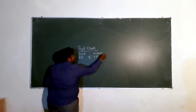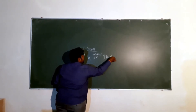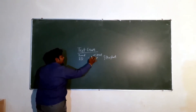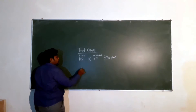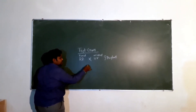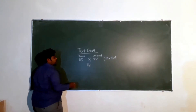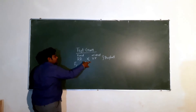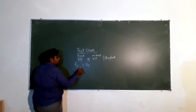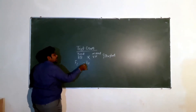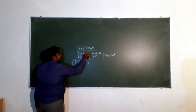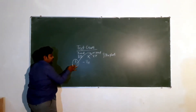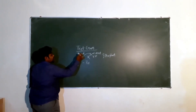We have taken the example in a pea plant. Capital R, capital R gene is responsible for the round character, and the wrinkled character is represented by small r, small r. When we have the F1 hybrid — when both parents cross — we get the product capital R, small r. This is the F1 hybrid. A cross made between the F1 hybrid and the recessive parent is called as test cross.